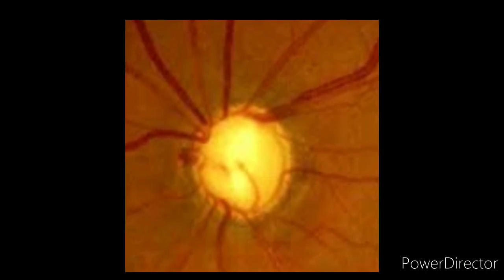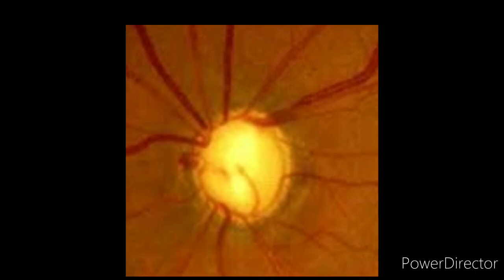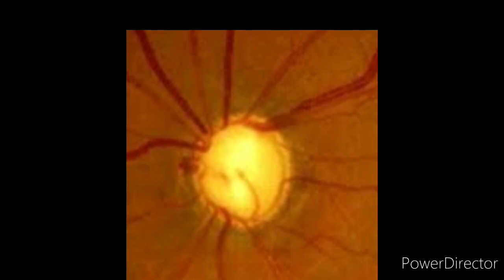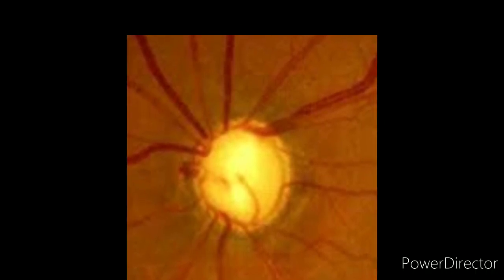So this is cup-disc ratio 0.9, almost full cup-disc. Now how to determine these? Well, for that I would like to draw a circle.